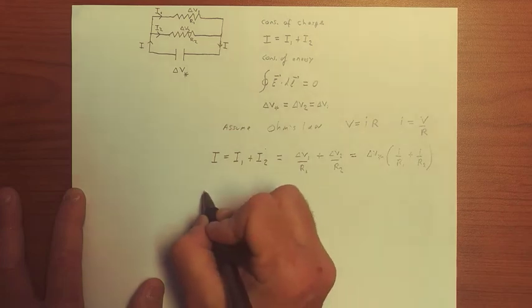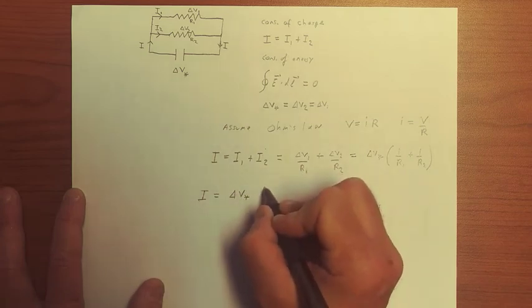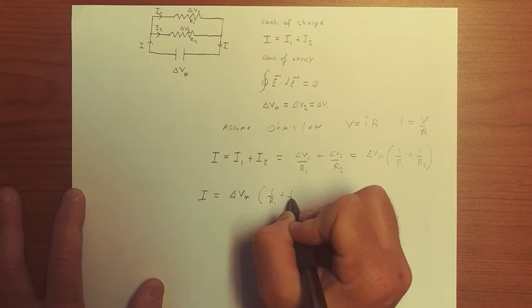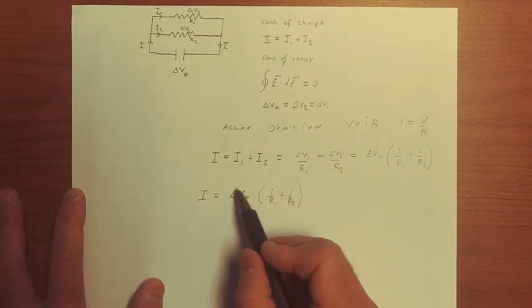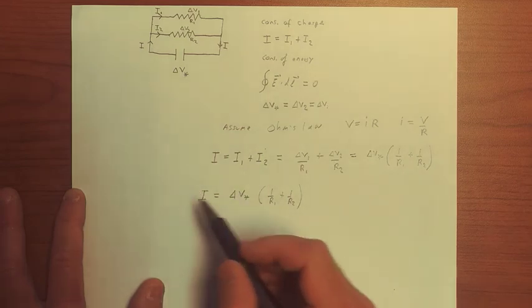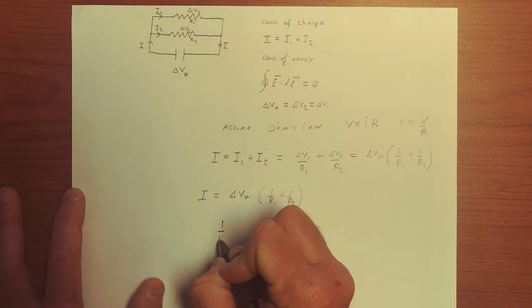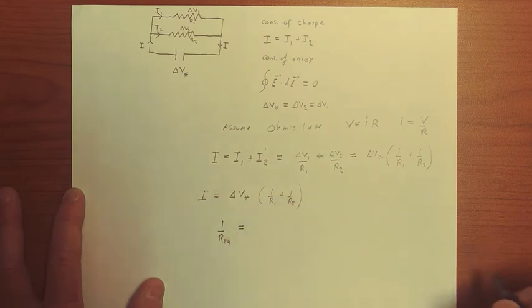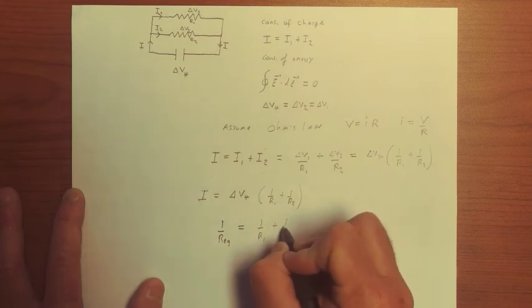And so what we have is that the current, the total current in the circuit obeys this relationship. And so voltage equals current times resistance. This is 1 over the resistance. And so we can say that 1 over the net resistance of the circuit in this case is equal to 1 over R1 plus 1 over R2.